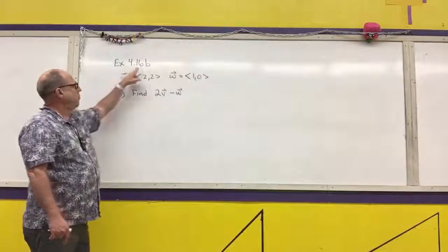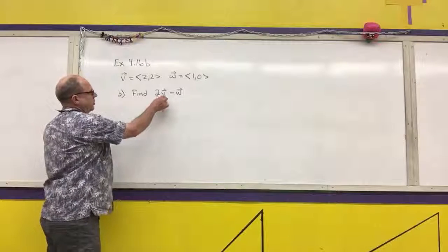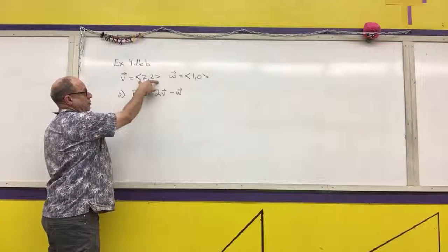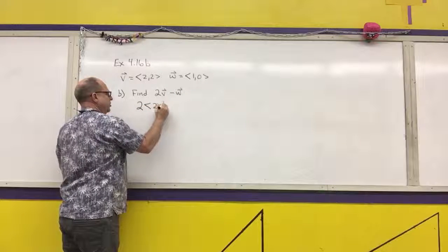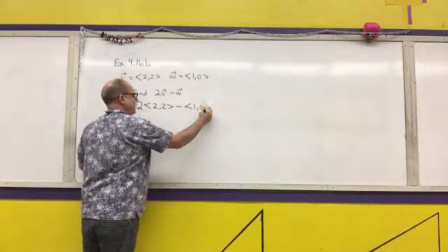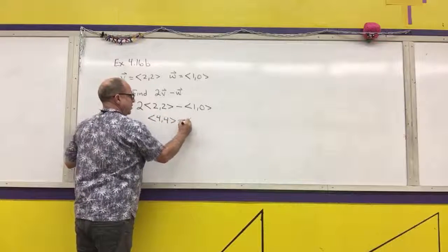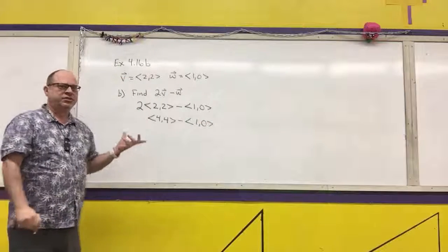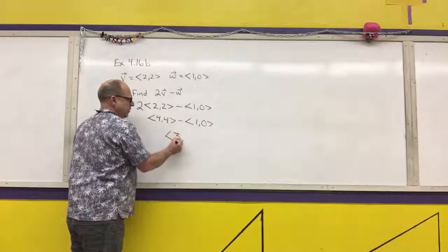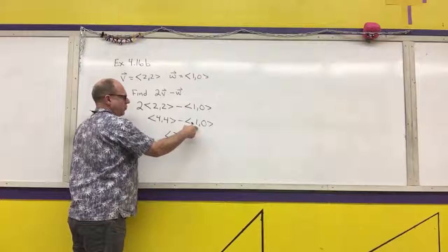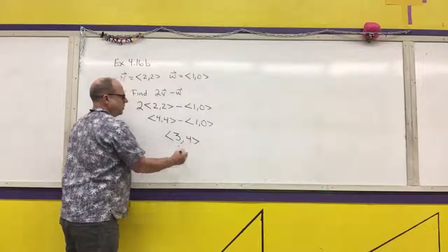For example 4.16b, we substitute: wherever we have vector v we put ⟨2, 2⟩, and wherever we have vector w we put ⟨1, 0⟩. So 2v minus w becomes 2 times ⟨2, 2⟩ minus ⟨1, 0⟩. Distributing gives ⟨4, 4⟩ minus ⟨1, 0⟩. For vector addition or subtraction, the x-components operate with x-components. So 4 minus 1 is 3, and 4 minus 0 is 4, giving the result ⟨3, 4⟩.